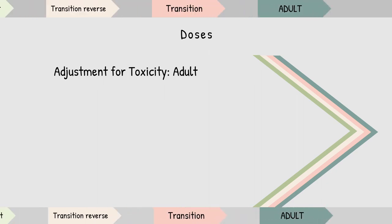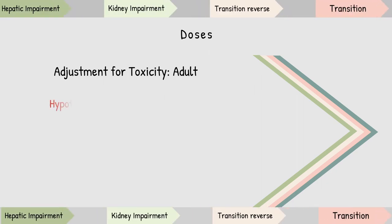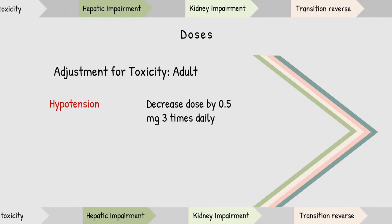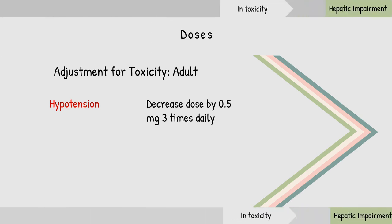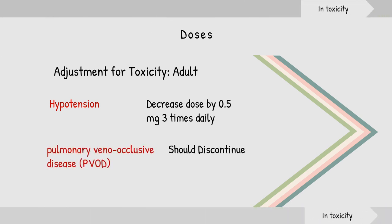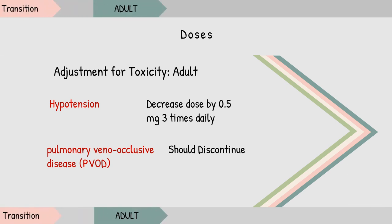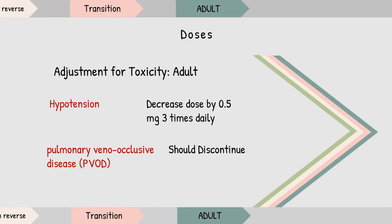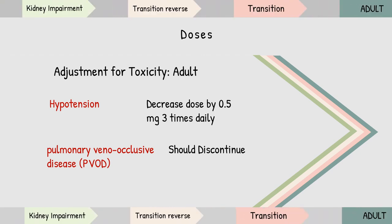In case of toxicity, if a patient has hypotension, decrease the dose by 0.5 mg three times daily. If a patient develops pulmonary edema, consider the possibility of pulmonary veno-occlusive disease, and Riociguat treatment should be discontinued because it does not have action on pulmonary veins.